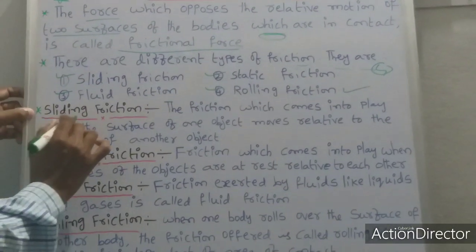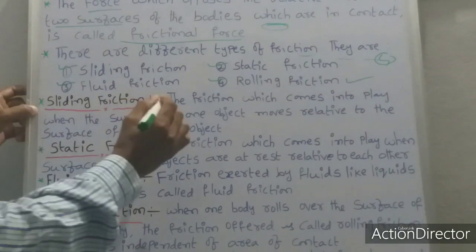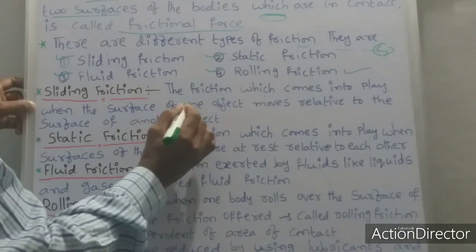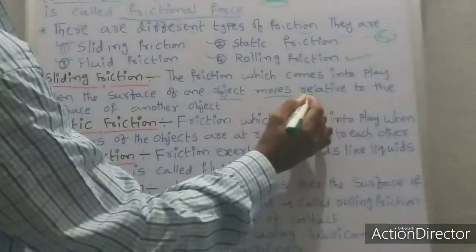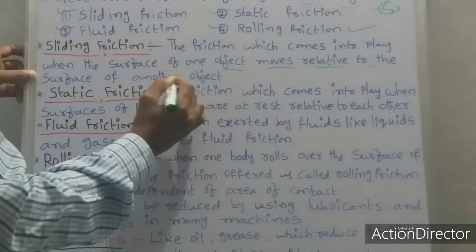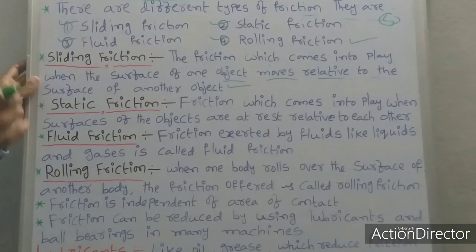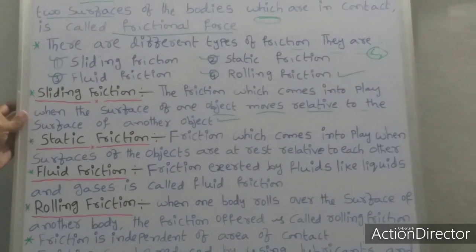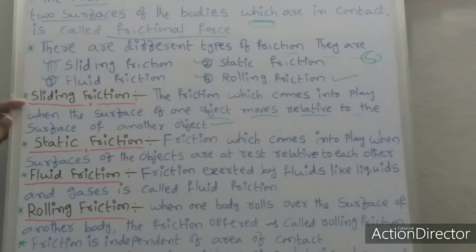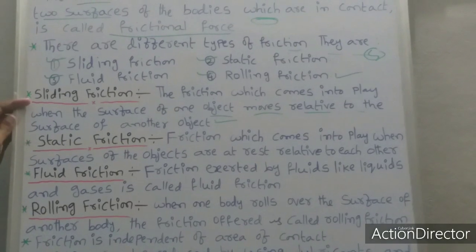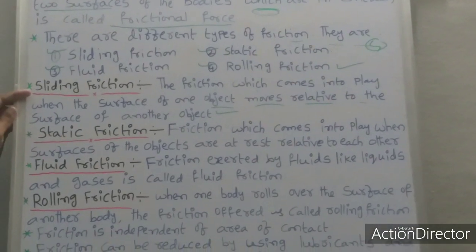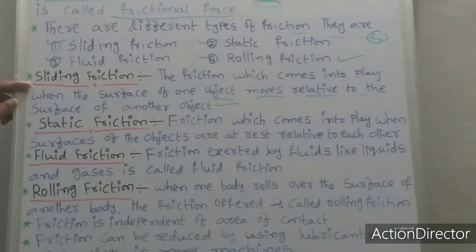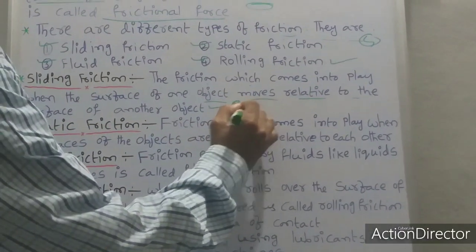First one, sliding friction. Definition: the friction which comes into play when the surfaces of one object moves relative to the surface of another object. This is called sliding friction. Sliding friction example students: when the applied force is more than the limit of static friction, then the object starts to move. This is an example for sliding friction.